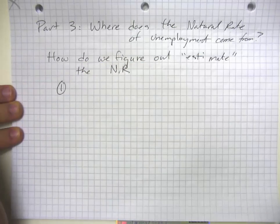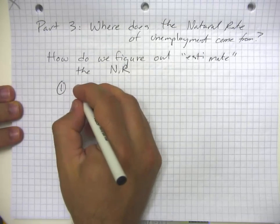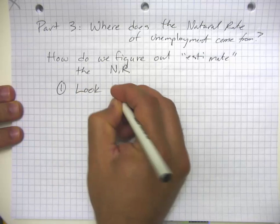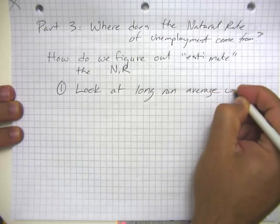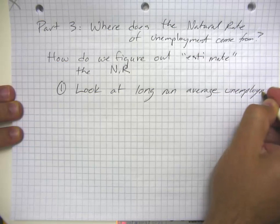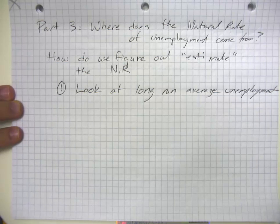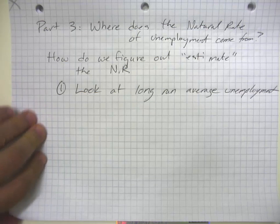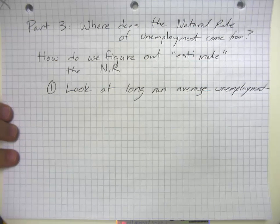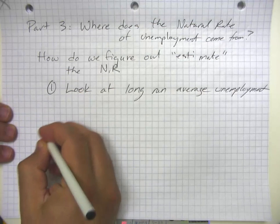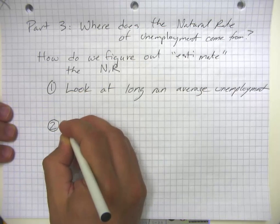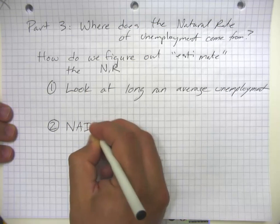There are two approaches. One approach — which is basically what I referred to earlier — is to look at the long-run average unemployment rate. A potential problem with that approach is that if a country has been stuck in a recession for a very long time, we're going to confuse how much unemployment is due to the recession versus the basic underlying structure of that economy.